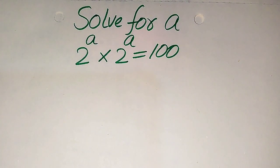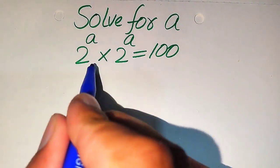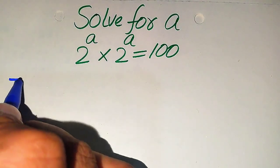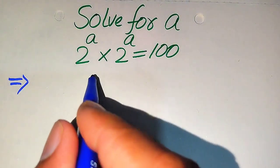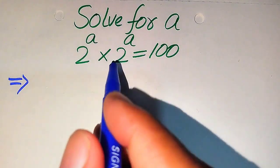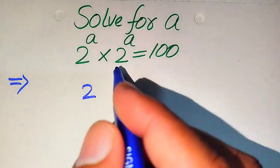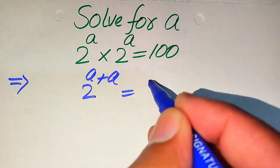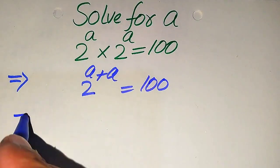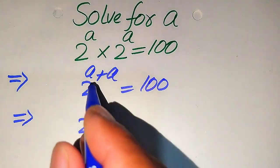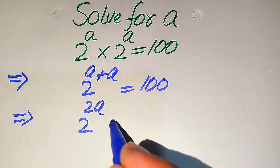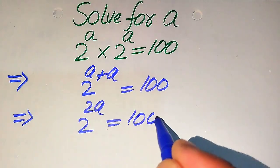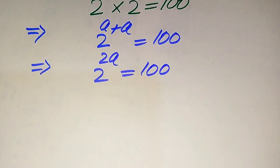We focus on the left hand side — you can see that the bases of both of these two terms are the same. We use the exponential law: when bases are the same, we add the exponents. It will become 2 to the power of a plus a is equals to 100, which gives us 2 to the power of 2a is equals to 100.